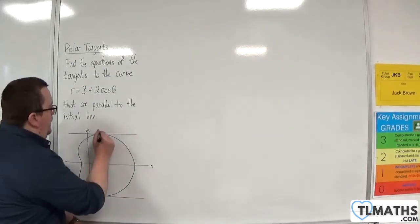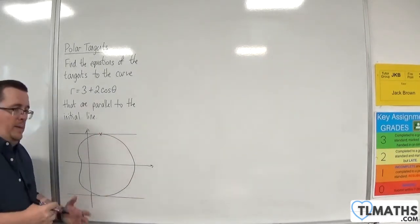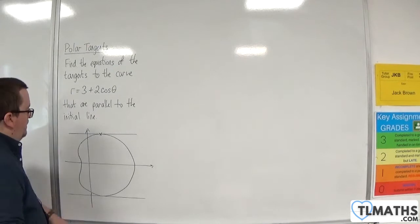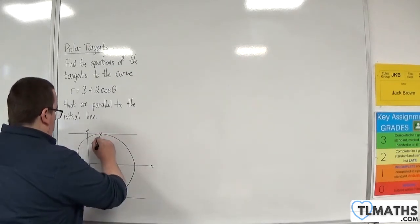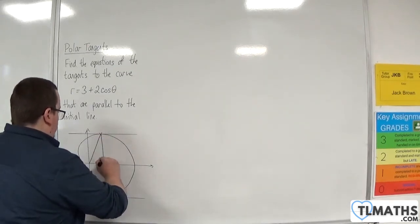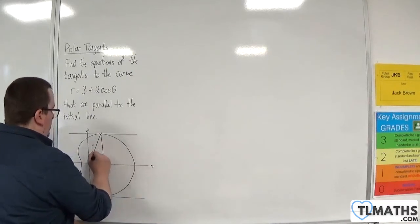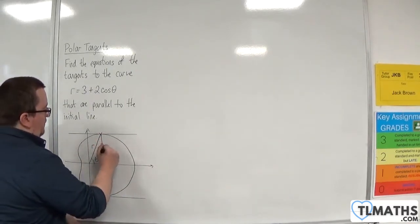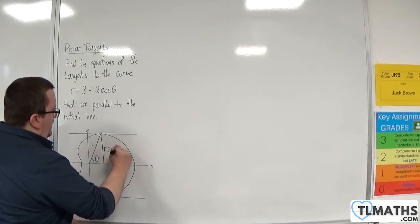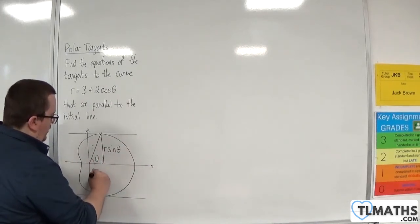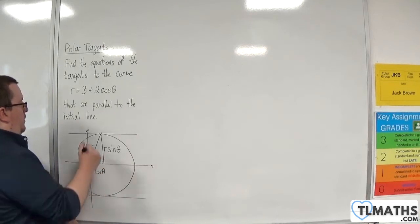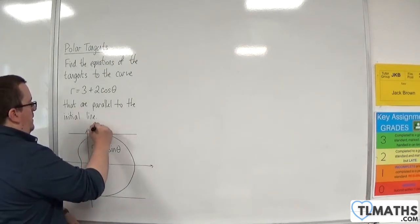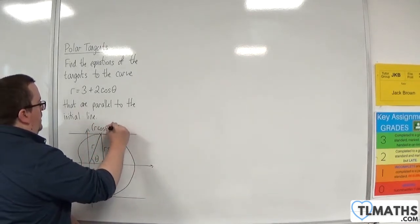Okay, so this is the point that I'm going to be interested in, just to start off with, and I'm going to draw a right-angled triangle, because that length will be r, that's theta. This length is r sine theta, and this length is r cosine theta. So, the coordinates of my point are r cos theta, r sine theta.